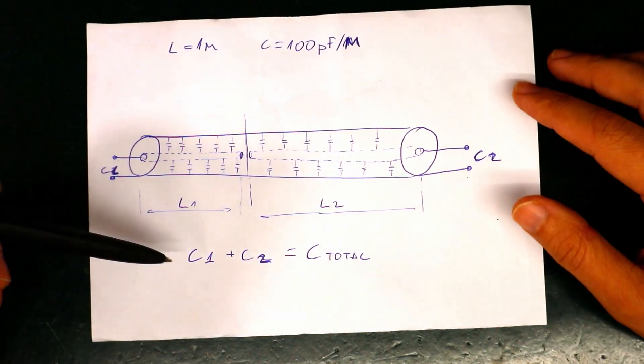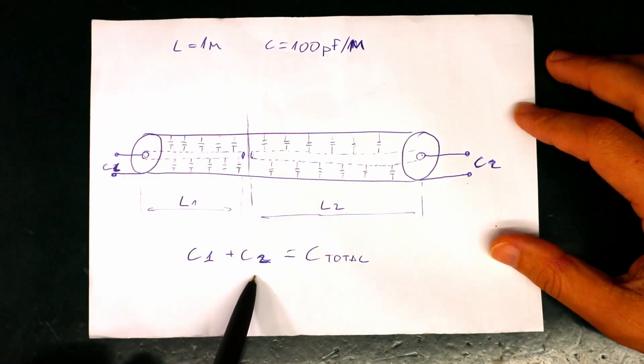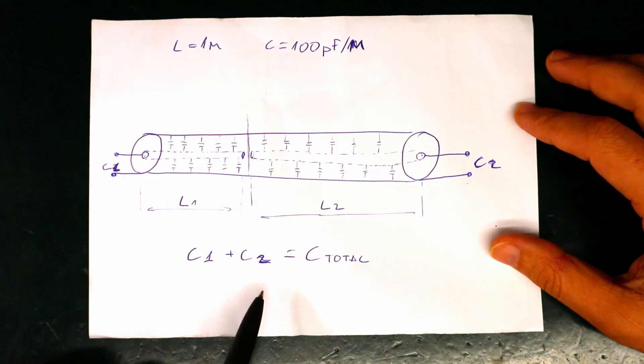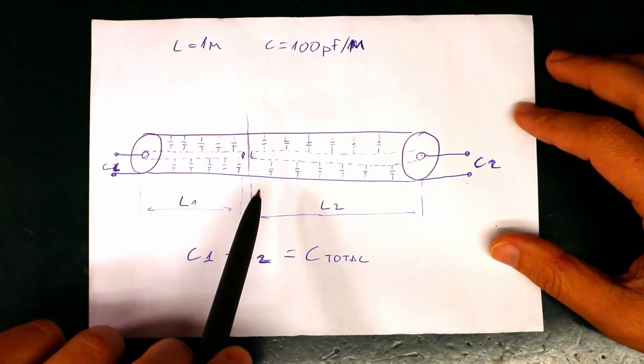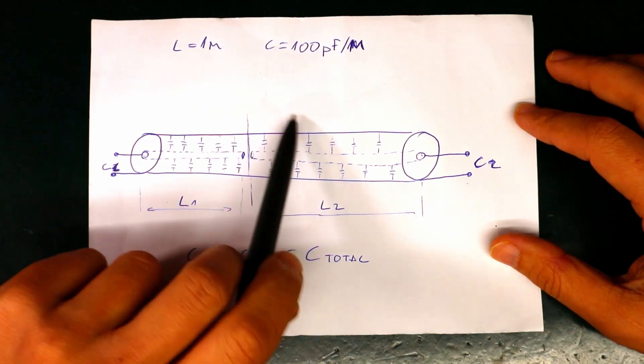What if C1 is 50 pF and C2 is also 50 pF. This clearly indicates that the faulty or the open circuit is somewhere here next to the middle.